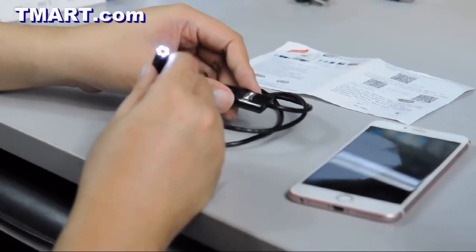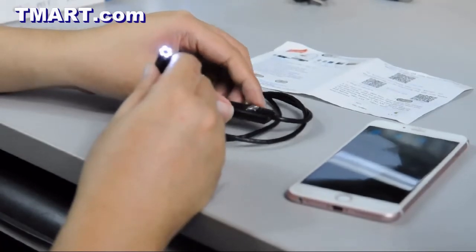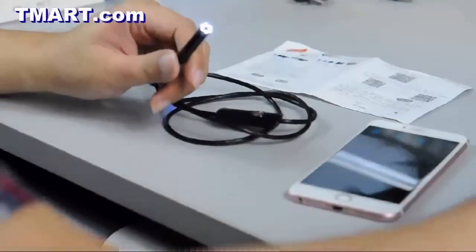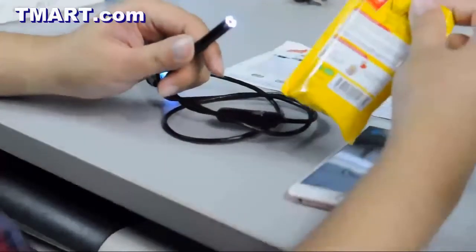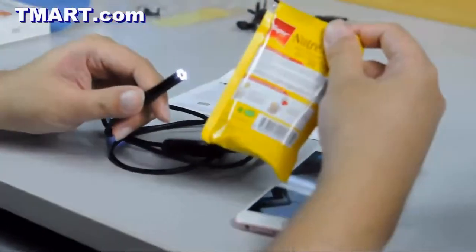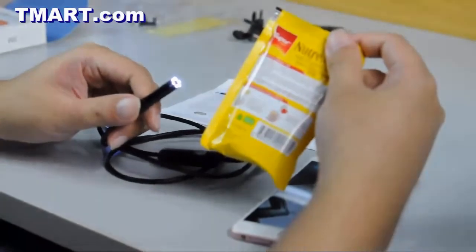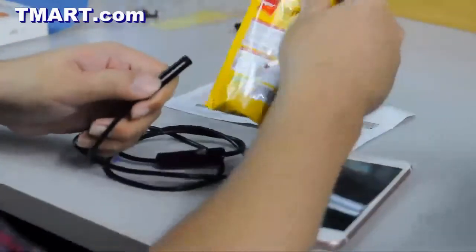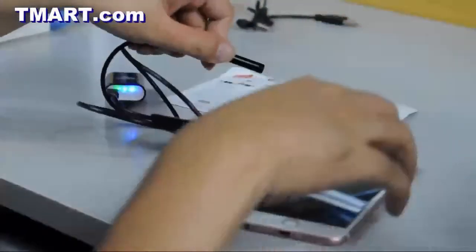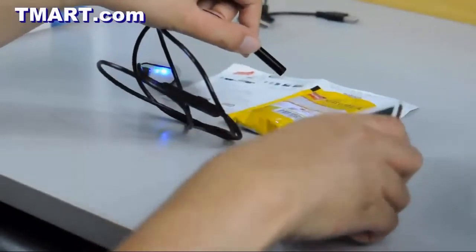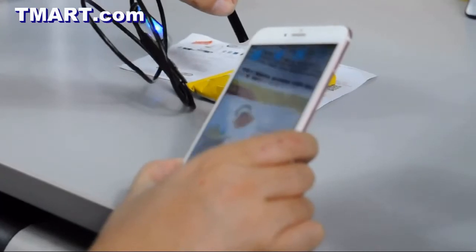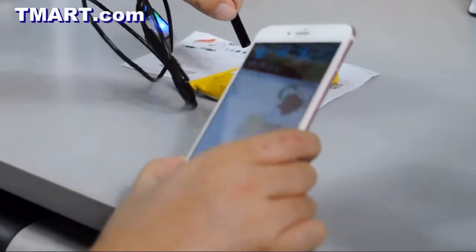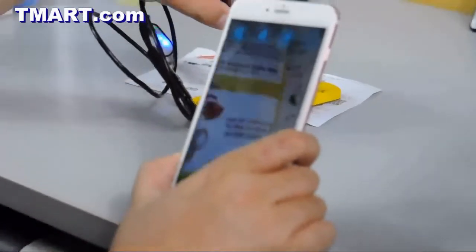To give you an example of the picture quality, you can see, we have a little bag here. As you can see, the text are very small. You can adjust the position of the camera to make the image sharper.